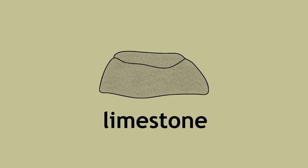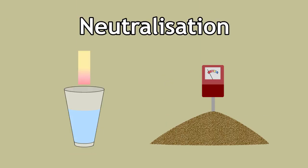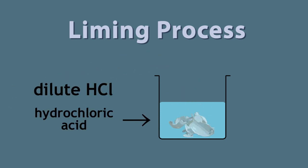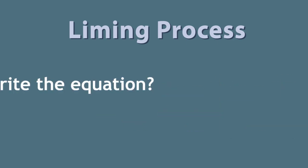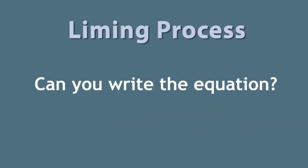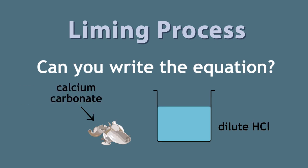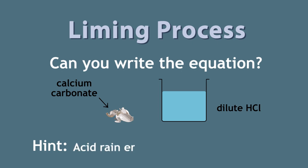Limestone can also be used to neutralize acidic waters and soil. This process is known as liming. We can mimic this liming process by placing some eggshells into a very dilute solution of hydrochloric acid. You can observe that the eggshells will dissolve in acid and a gas is produced. Can you write the equation for this reaction? Keep in mind that these eggshells are composed primarily of calcium carbonate. It's very similar to the reaction that occurs when acid rain erodes limestone structures. Please pause and resume when ready.